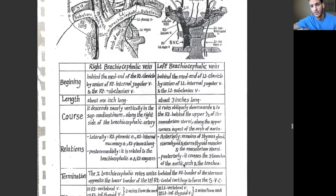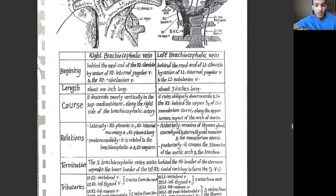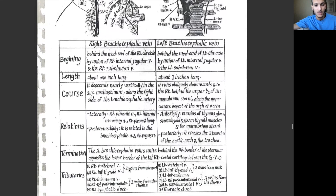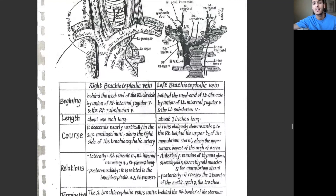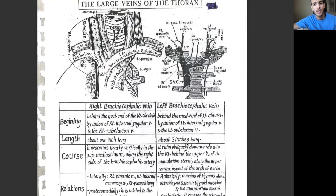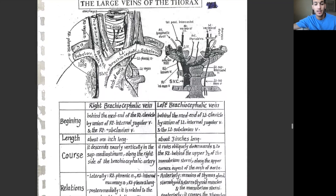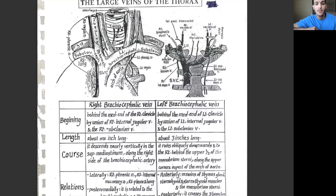Those structures are present posteriorly to the left brachiocephalic vein. The tributaries of the left brachiocephalic vein include the left vertebral vein, left inferior thyroid vein, left internal mammary vein, left first posterior intercostal vein, left superior intercostal vein, and the thoracic duct. Those are the tributaries of the left brachiocephalic vein.